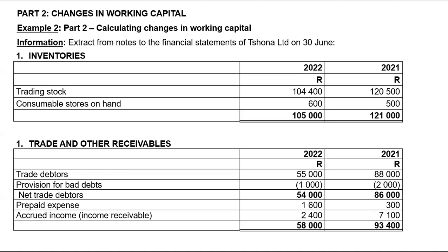When you look at your inventory, your inventory for this year — 30th of June 2022 — it's $105,000. Last year's inventory amounted to $121,000, and you realize that your inventory has gone down. When it comes to the cash flow statement, we need to know that the reduction of inventory cash-wise refers to a cash inflow.